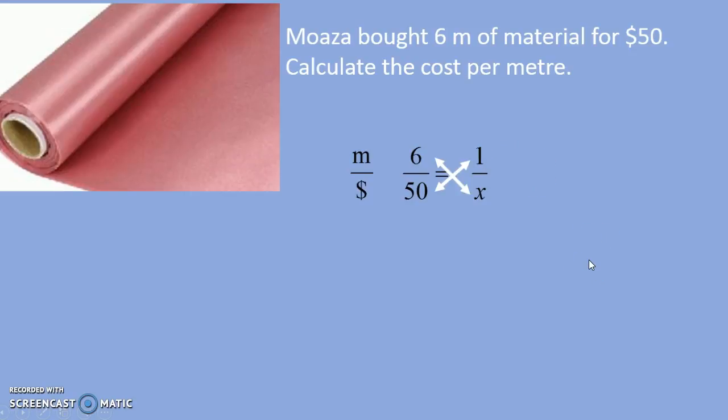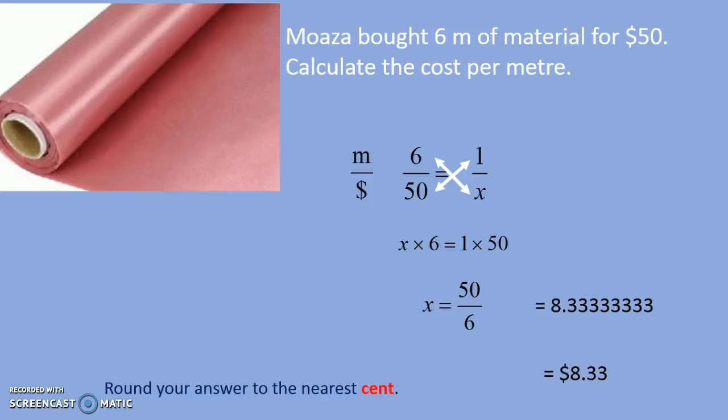Again, cross multiply. 6X is equal to 50. Divide both sides by 6, and X is equal to 8.3 recurring. Again, round your answer to the nearest cent. One meter of material costs $8.33. Thank you.